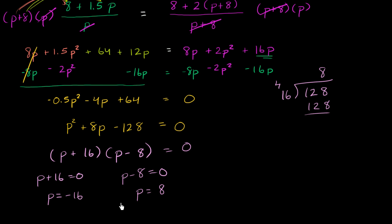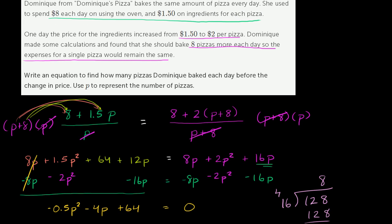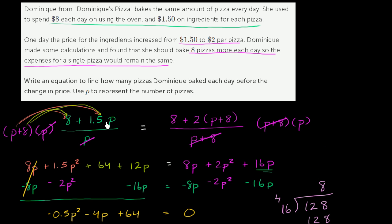Since we're talking about a number of pizzas, P = −16 doesn't apply — that would mean Dominique is somehow destroying 16 pizzas a day. So the answer is P = 8: she made 8 pizzas per day before the price increase, and after the change she made 8 more, or 16 pizzas per day.